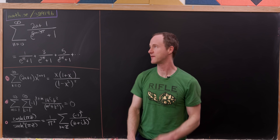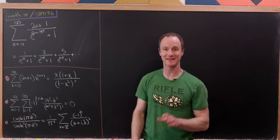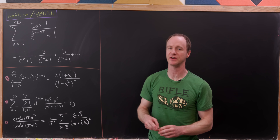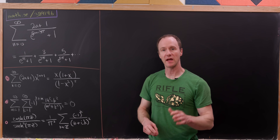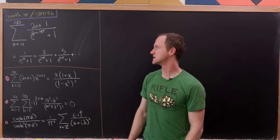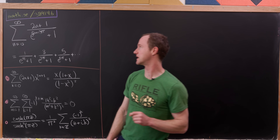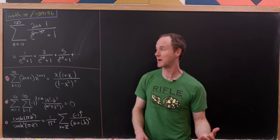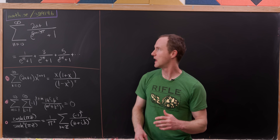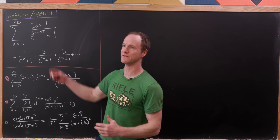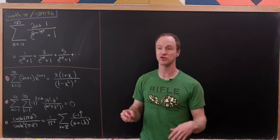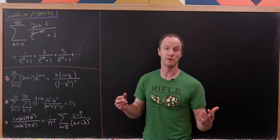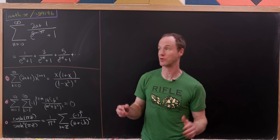Today we're going to find the sum of a series that I found on the Math Stack Exchange, and I believe this series is originally attributed to Ramanujan. It's the sum as n goes from zero to infinity of (2n+1) over e^((2n+1)π) + 1. Notice that there are lots of irrational, even transcendental numbers wrapped up in this sum, and what the actual value is, I think, is kind of surprising.